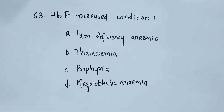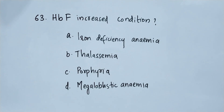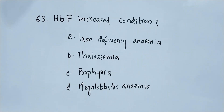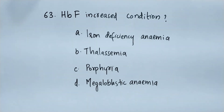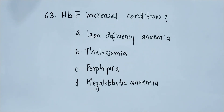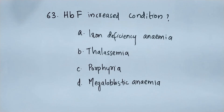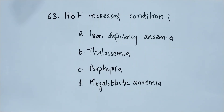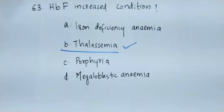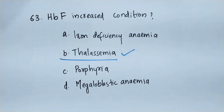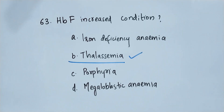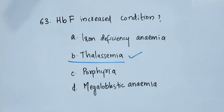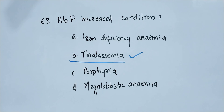Question number 63. HbF or fetal hemoglobin has increased in which of the following conditions? Option A iron deficiency anemia, option B thalassemia, option C porphyria, option D megaloblastic anemia. The right answer is option B. HbF is increased in thalassemia.